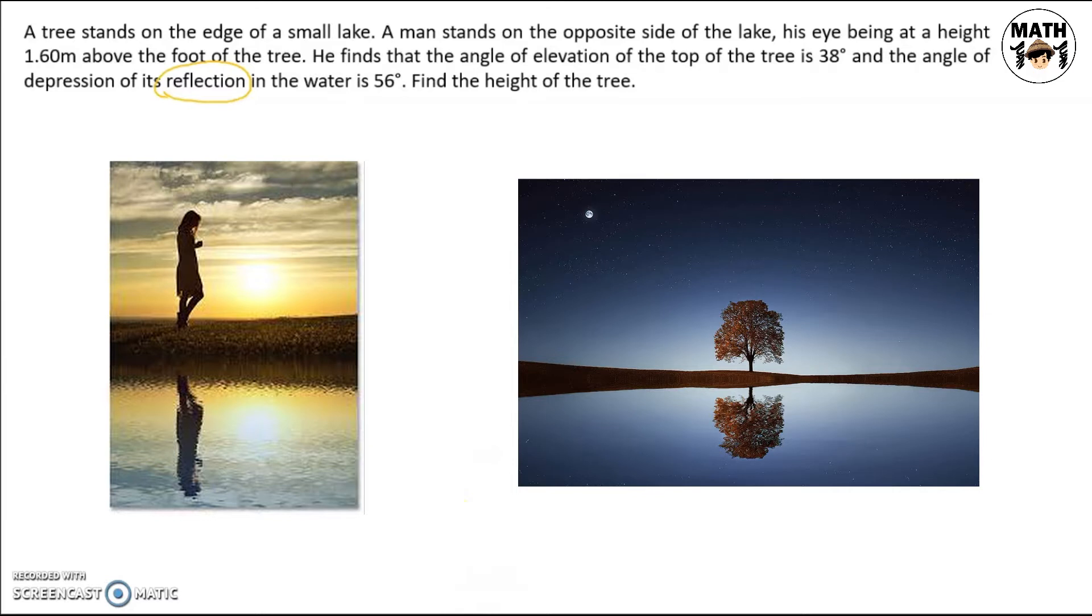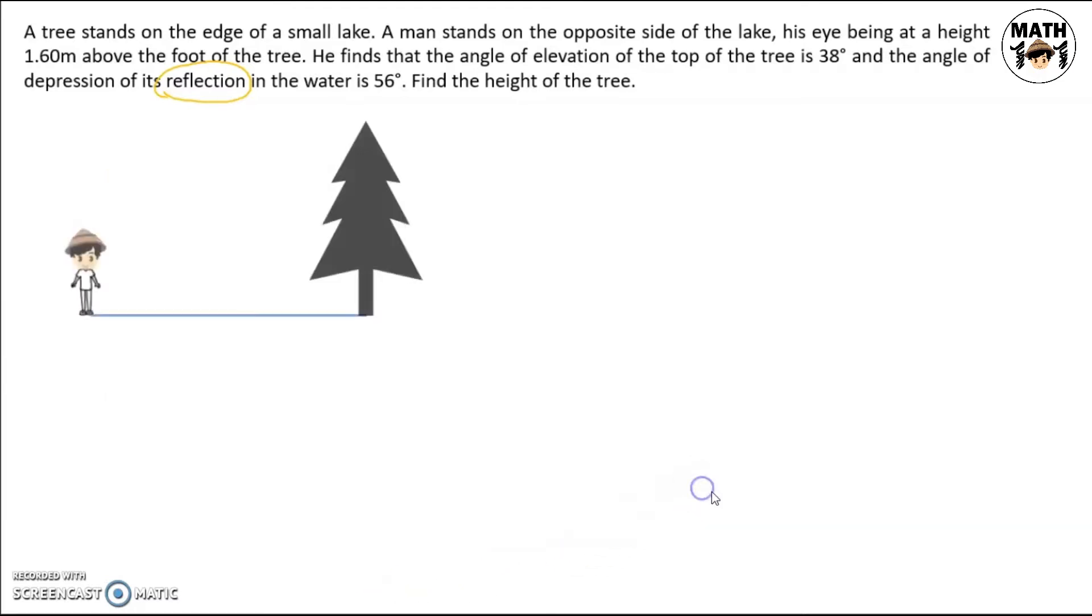Now let's draw the figure for this problem. Let's say this is our lake, with the observer and the tree on opposite sides. Then the height of the observer is 1.6 meters above the foot of the tree.